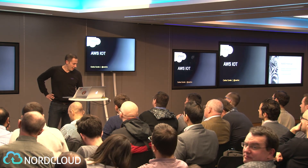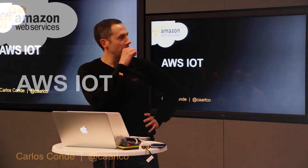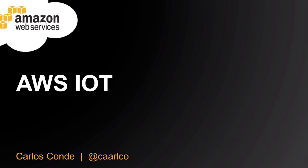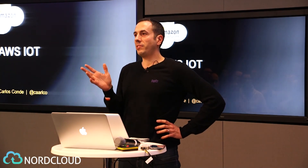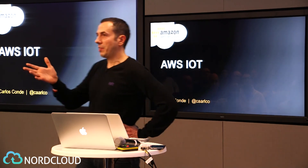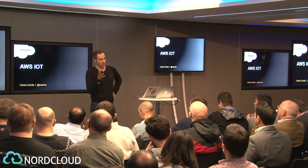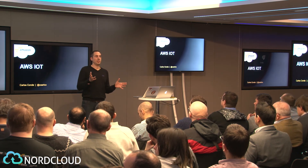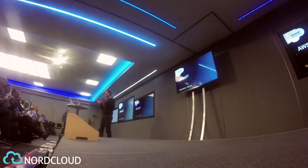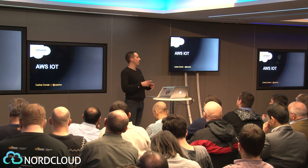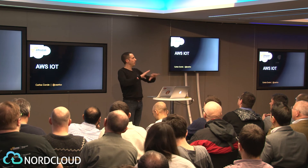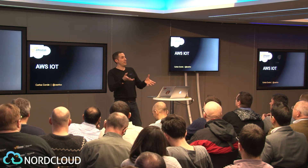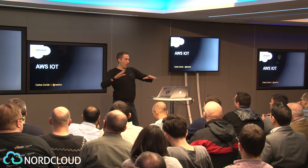AWS IoT, like many services announced in the past, makes it easier to build systems you already build. Take Amazon RDS as an example — you can run a relational database on an EC2 instance, but RDS removes the burden of managing it by packaging the database for you. AWS IoT does exactly the same for IoT backend architectures.